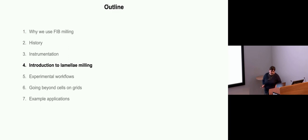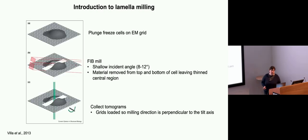Now I want to go through a basic overview of how we do the milling and the canonical cells on the grid approach. We start with something growing on a grid, single cell, and then the milling is done at this very shallow angle relative to the grid, milling to remove material underneath and from the top, leaving this thinned region in the middle of the cell that's supported by these edges. This angle is really crucial so that when we come to collect the tomograms, for most microscopes we have practical tilt limits of 60 to 70 degrees.